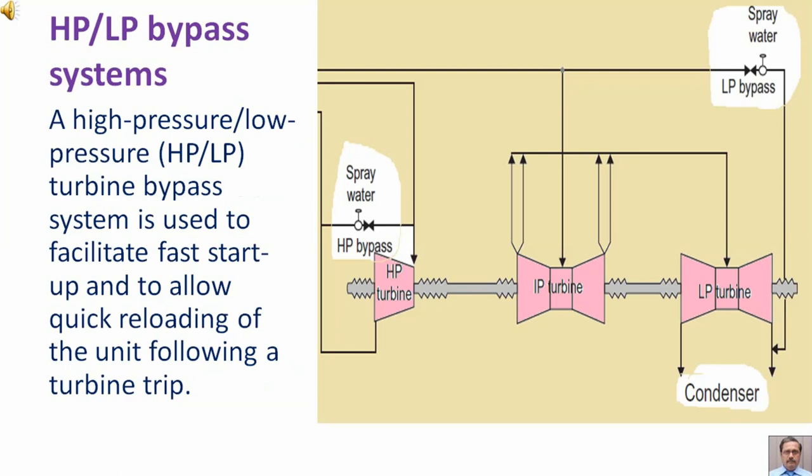A high pressure low pressure HP-LP turbine bypass system is used to facilitate fast startup and to allow quick reloading of the unit following a turbine trip.